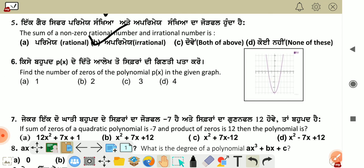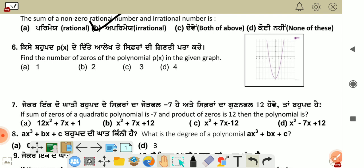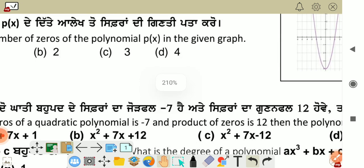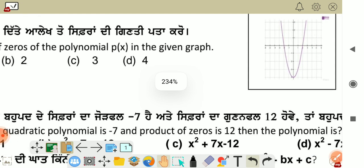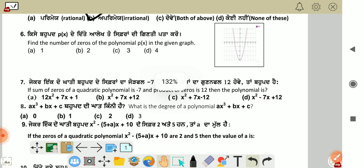Find the number of zeros of polynomial p(x) in the given graph. In the graph, the number of zeros equals how many points p(x) cuts the x-axis. It cuts at two points, first point and second point. It means the number of zeros is 2.